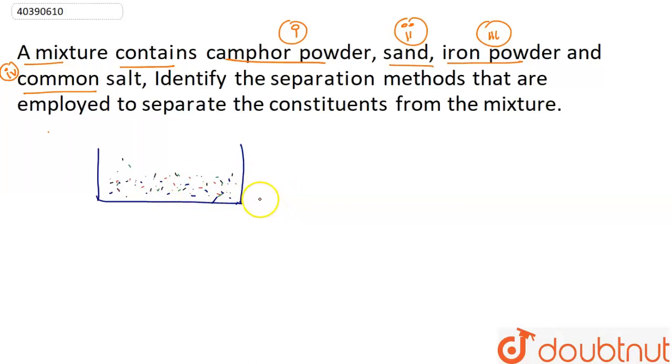So first of all, we have a bar magnet. This is North Pole and this is South Pole. If we move this bar magnet properly back and forth to the mixture, then the iron powder will stick with it. This way we have 3 things remaining in the container.